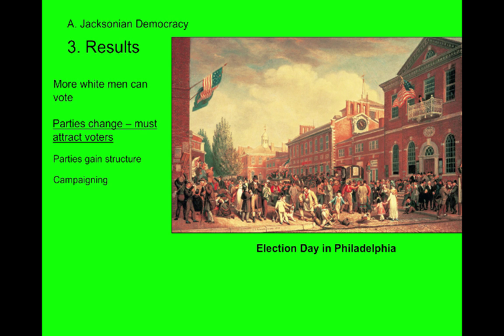We also see the rise of campaigning. During the time of Washington, Adams, and Jefferson, it was considered a faux pas for elite men to go out and ask for votes — that was demeaning. They didn't need to, because everyone just voted for the best among them. But now, with the emphasis on the common man voting and holding office, candidates have to convince people: 'You should vote for me because I'm just like you.' We start to see campaign banners, buttons, bands, and parades.